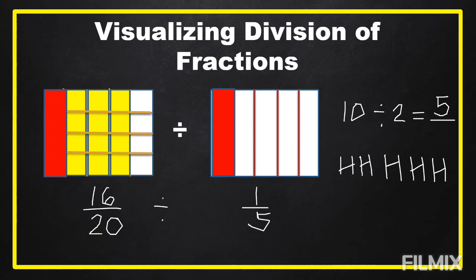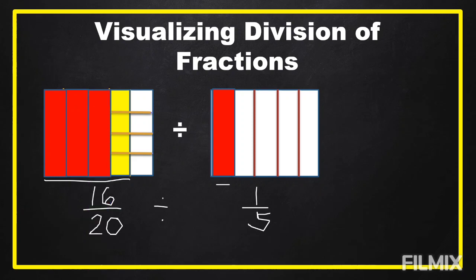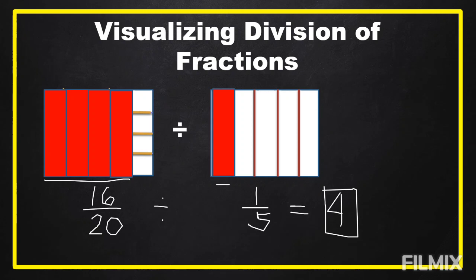The same way with our fractions — how many one fifths can fit into 16 over 20? Let's try to fit: this is our one fifth, and this is our 16 over 20. We're going to fit one fifth into 16 over 20. One, two, three, four. So 16 over 20 divided by one fifth — we count four one fifths fitting in.